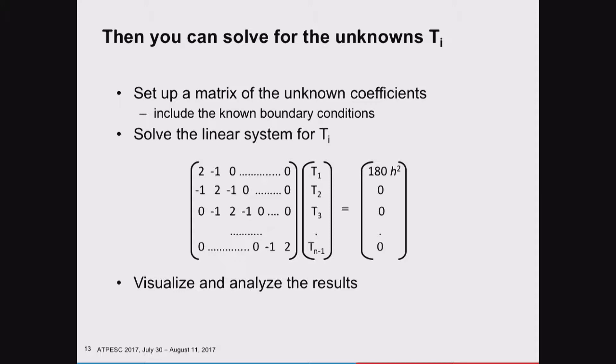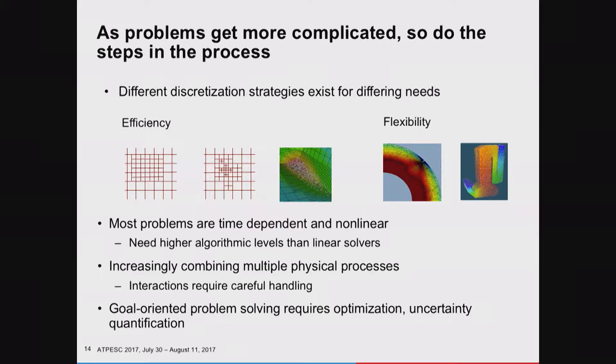Of course, it's not that easy when you start looking at more complex physical phenomena. As we're moving through different kinds of domains and different kinds of physics, there are different strategies you want to use for each one of those steps. For example, when looking at discretization strategies: in our one-dimensional rod, we just had individual points. When you're looking at two or three dimensions, you need to break that domain up into smaller pieces of geometry—little cubes, little triangles, little hexahedra, little tetrahedra.